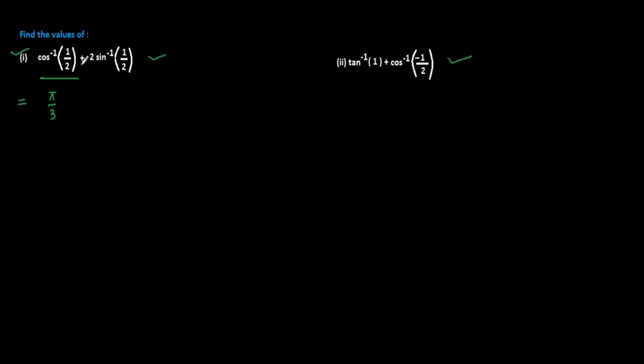Next we are having plus sign, so we will be writing plus here. Then 2 will be as it is into sin inverse 1 by 2. It is positive value, directly we can write the answer. At which angle sin become 1 by 2? We know it is 30 degree, that means pi by 6.